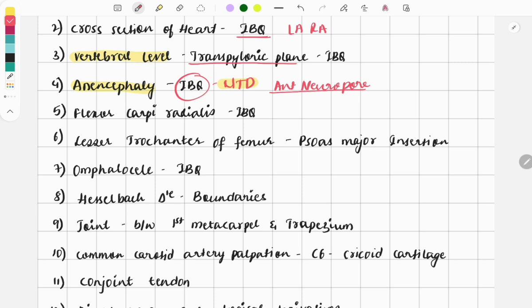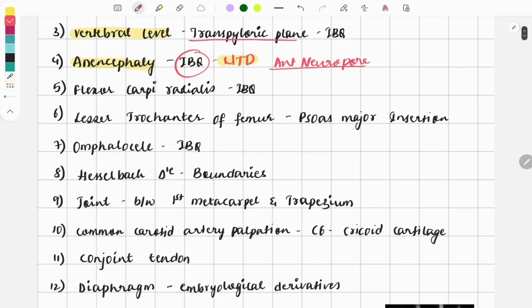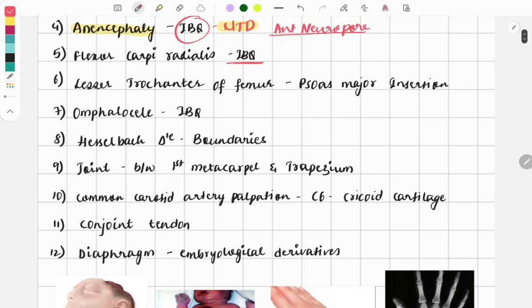Next question was asked on the flexor carpi radialis. The tendon of the flexor carpi radialis was marked in an image-based question. The lesser trochanter of the femur image was given and they had marked the lesser trochanter. In the options it was asked which muscle inserts here, and the answer was the psoas major. This is also a very repeated topic.